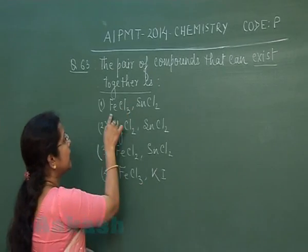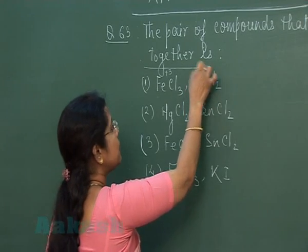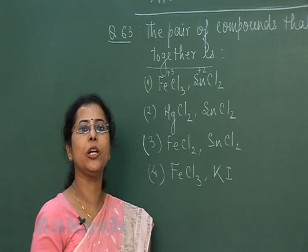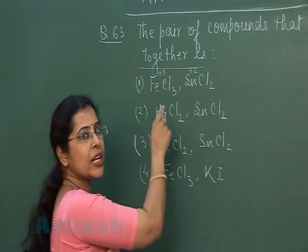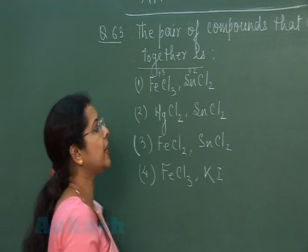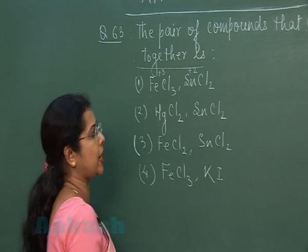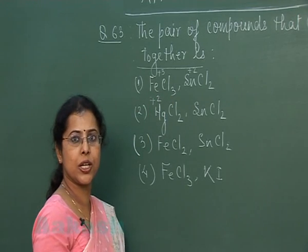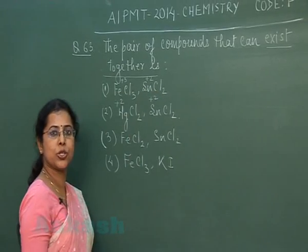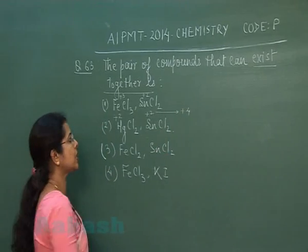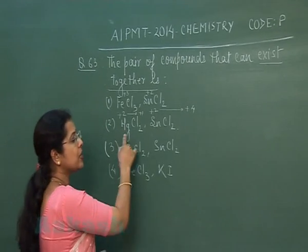In option 1, FeCl₃ has iron in +3 state. In SnCl₂, tin is in +2 state, and tin can be oxidized from +2 to +4. So tin loses electrons and Fe³⁺ gains electrons, converting to FeCl₂. These two substances react with each other and cannot coexist. In option 2, HgCl₂ has mercury in +2 state (stable at +1), and SnCl₂ has tin in +2 state. Tin oxidizes to +4 and mercury reduces to +1, so they react and cannot be kept together.